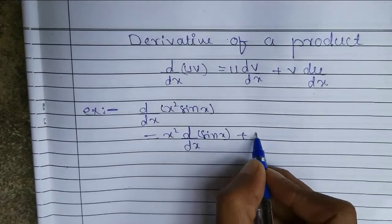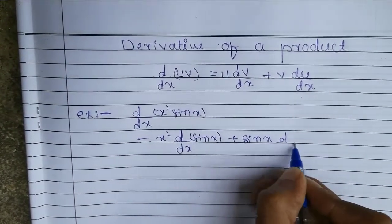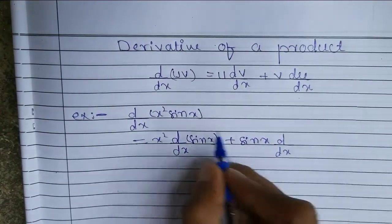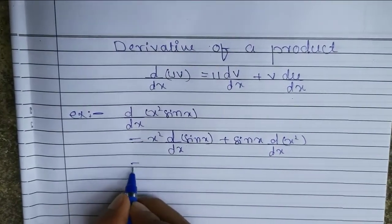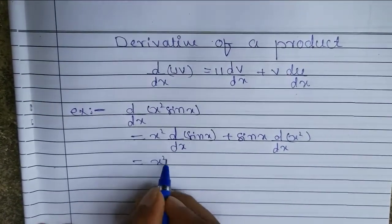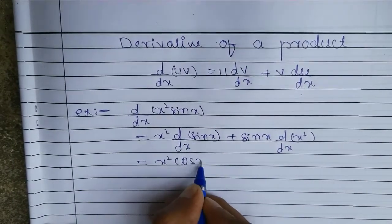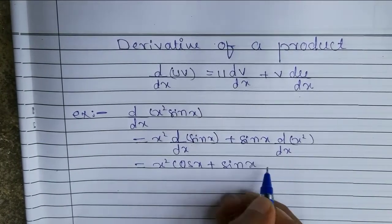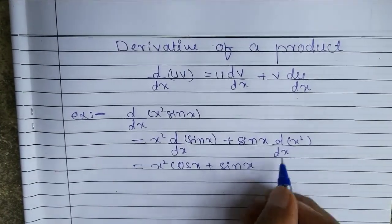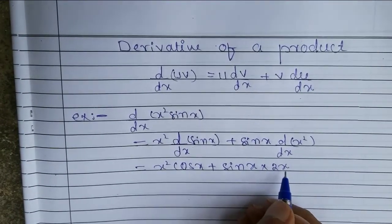Plus the value of v, that is sin x, d by dx the value of u, that is x square. So here, x square — we know the differentiation of sin x, that is cos x — plus sin x as it is, we know the differentiation of x square, that is 2x. This completes our first question.